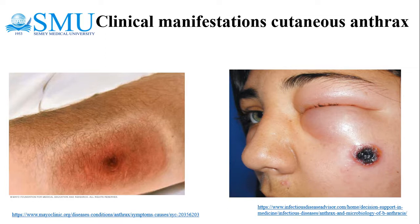The primary skin lesion is a non-descript, painless, pruritic papule that appears three to five days after introduction of endospores. In 24 to 36 hours the lesion forms a vesicle that undergoes central necrosis and drying, leaving a characteristic black eschar surrounded by edema and purplish vesicles. The edema is usually more extensive on the head or neck. The lesion is not purulent and is characteristically painless.